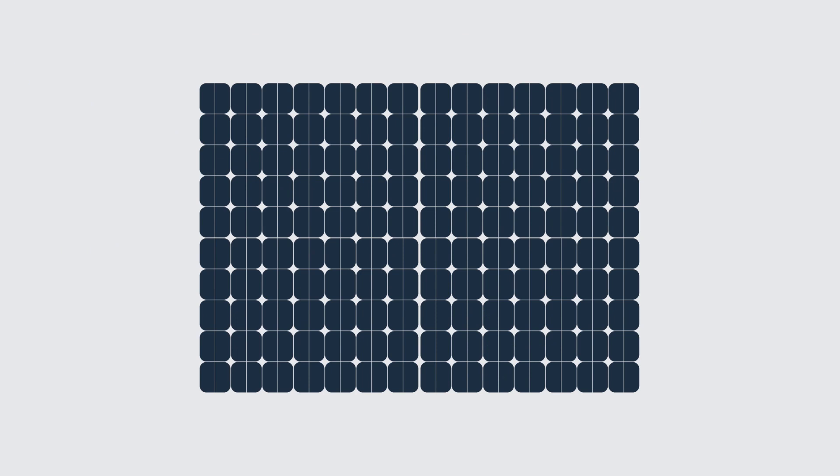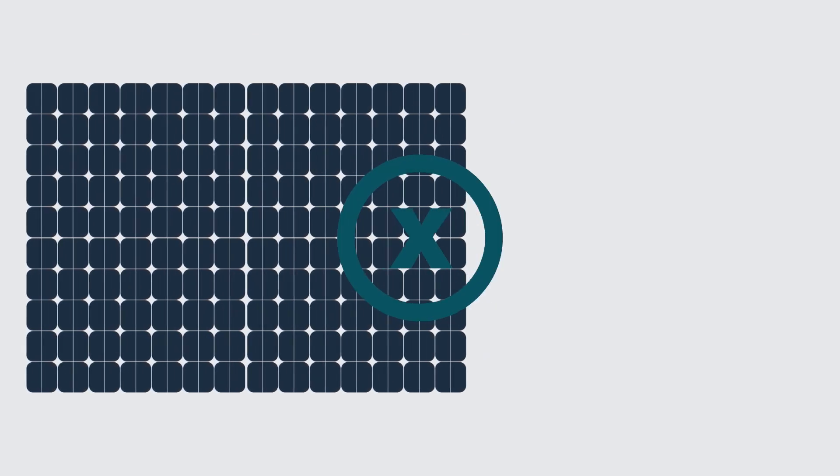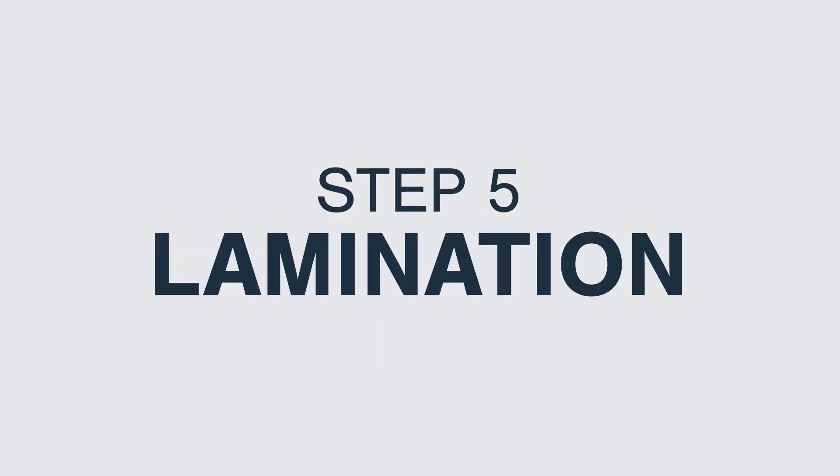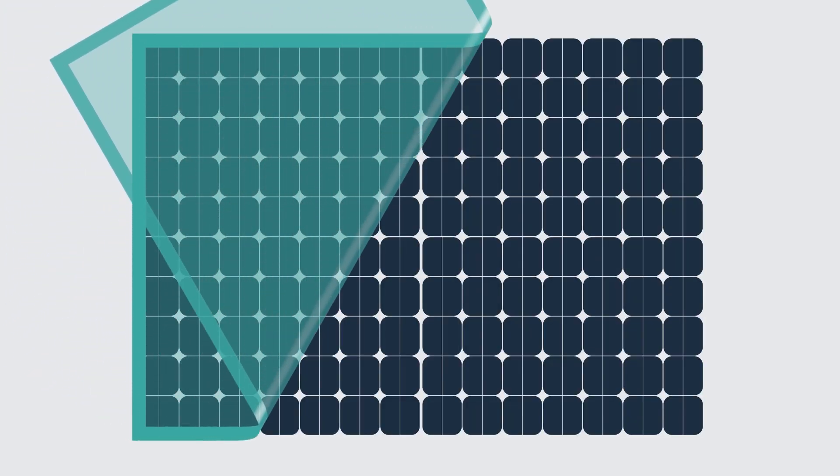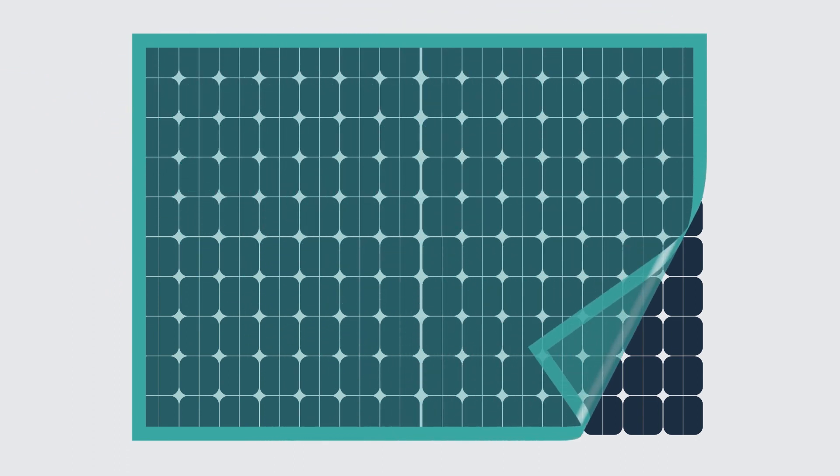If any such area is spotted, the module is sent back for fixing the area. Step 5. Lamination. The lamination is a decisive moment, while the glass, EVA, cells and backsheet are tightly bound together by high temperatures to form the body of the module.